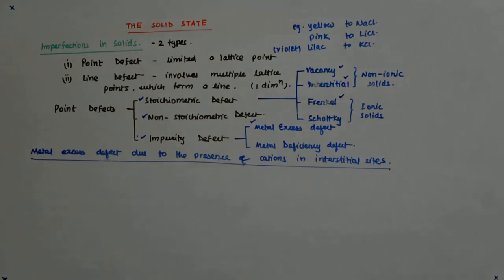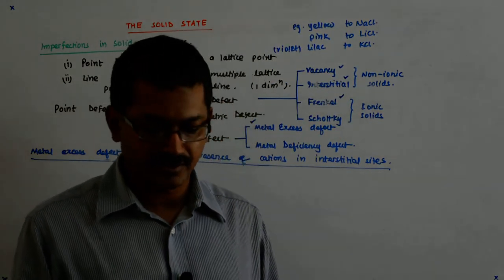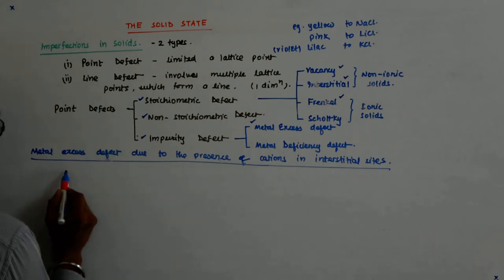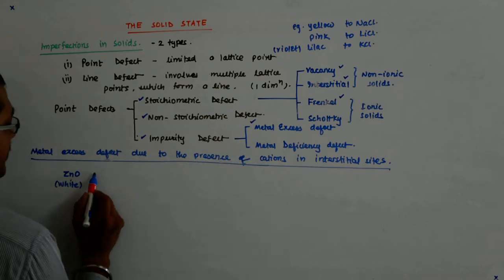Now we come to another form of metal excess defect where the cations move into the interstitial sites. For example, zinc oxide, which is white in color, initially white in color,